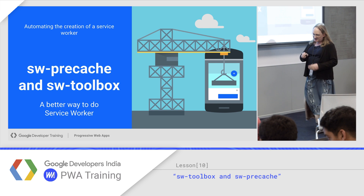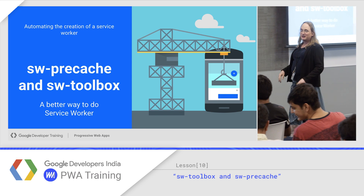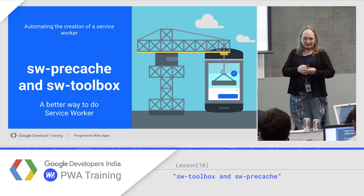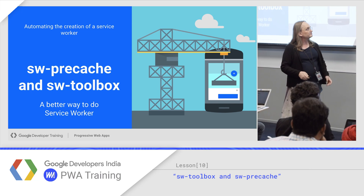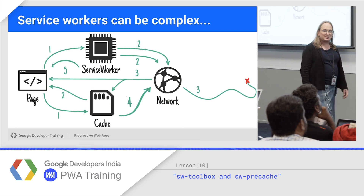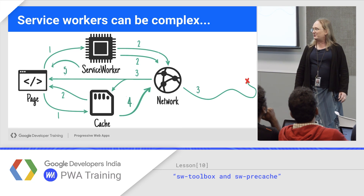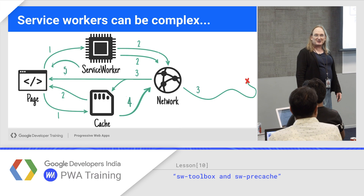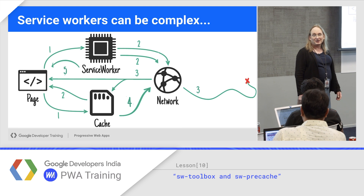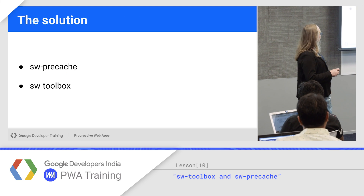I introduced precache and toolbox in the architectures talk. Let's take a little deeper look into them. Some service workers can be crazy complex. The whole idea of the service worker cache API is you write your own caching logic, but it can be complicated, so we wrote a bunch of it for you.